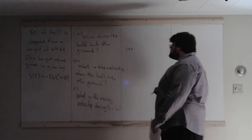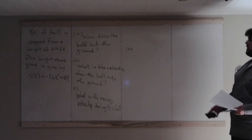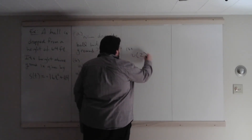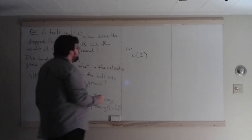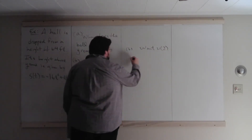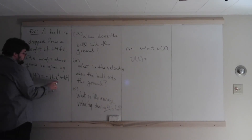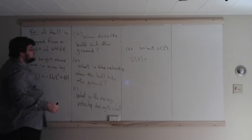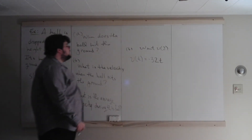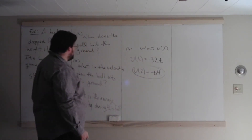Part B: what is the velocity when the ball hits the ground? The ball hits the ground after two seconds, so we want v at t equals 2. We need the velocity function, which is the derivative of our position function. The derivative of negative 16t squared is negative 32t, and the derivative of 64 is zero. So the velocity function is negative 32t. Velocity at 2 equals negative 32 times 2, which equals negative 64 feet per second.